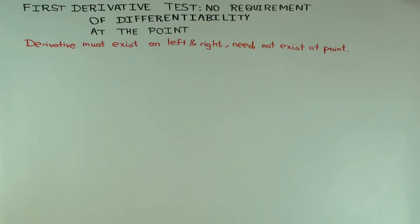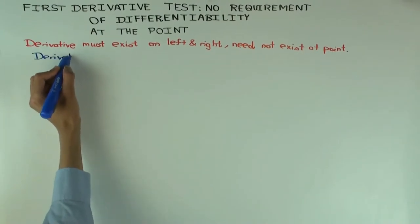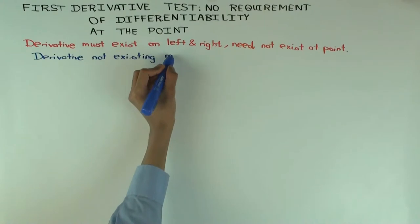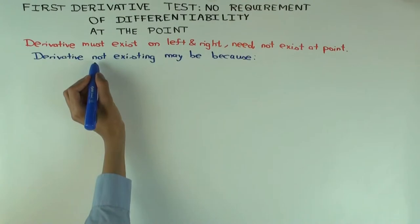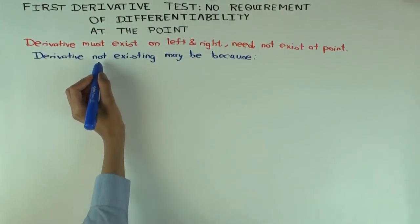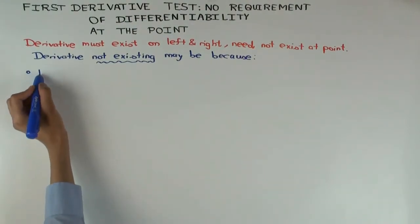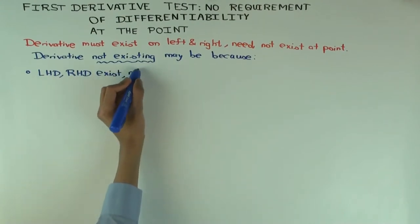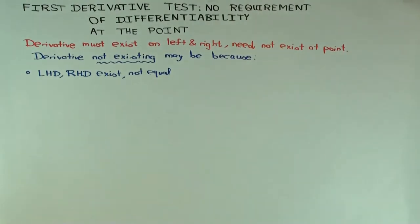The case where the derivative doesn't exist also has two sub-situations. I'm going to describe those two sub-situations and for each one illustrate how the first derivative test may be applicable. The first case is where the one-sided derivatives exist but are not equal. Can you give an example of a function where this happens but you can still use the first derivative test to determine whether it's a local max, local min, or neither?